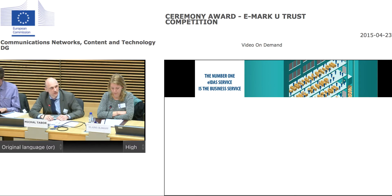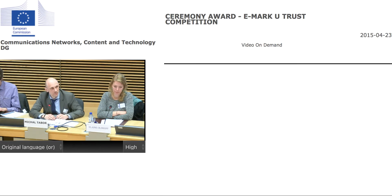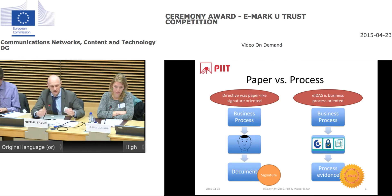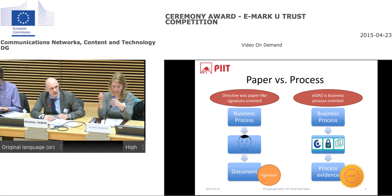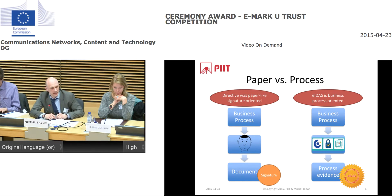Today I want to focus more on the electronic seal. What is the difference between paper processes and electronic processes? In paper processes, we need a person — a human — to sign documents. Because all directives were based on experiences from paperwork, signatures were everywhere. The new eIDAS regulation also requires preparing evidence from business processes based on automatic trust services.